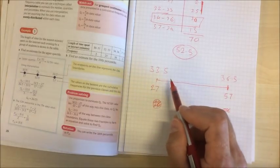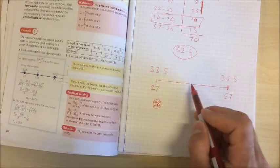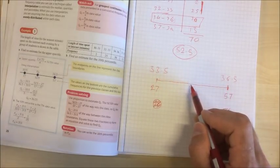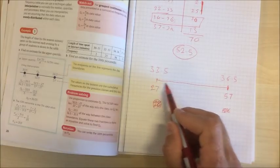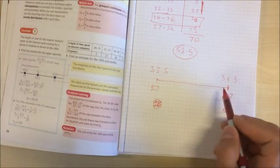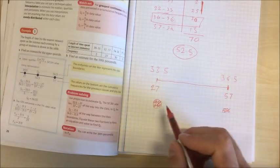So we're going to assume that we've got 30 pieces of data evenly spread out in this gap here. So if we were looking for the 28th piece of data we'd want 1 30th of the distance from 33.5 to 36.5.